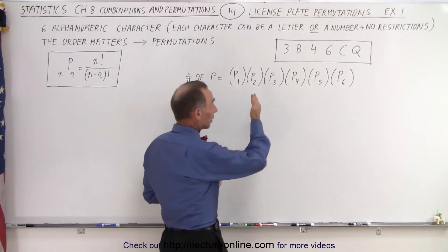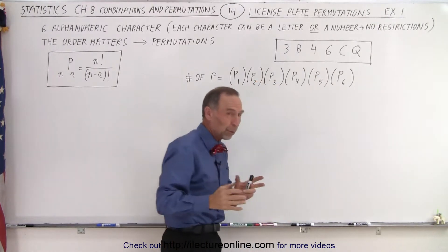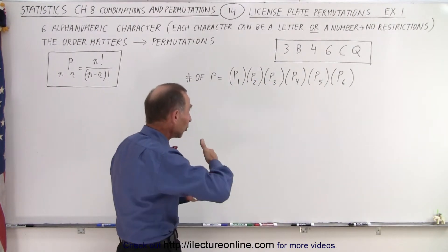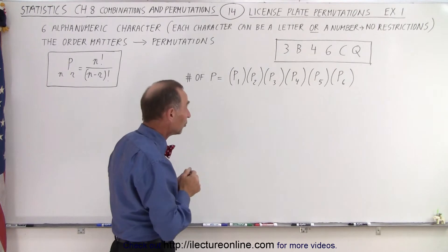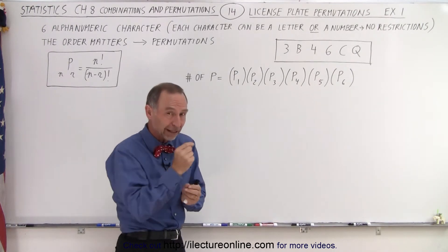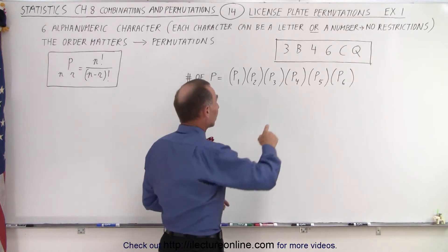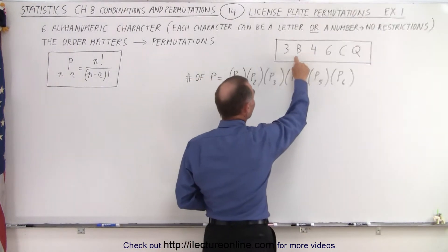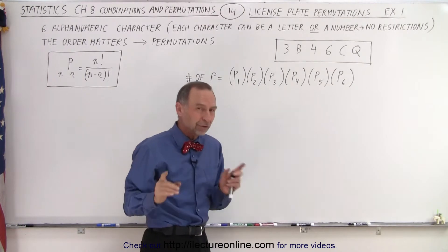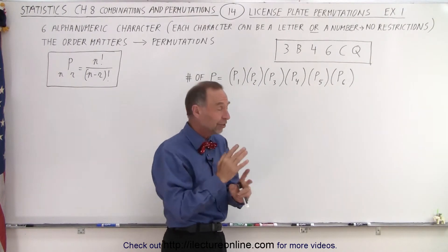Let's say we have an example here: a license plate with six characters — what we would call alphanumeric characters, meaning they can be letters or numbers. There are 36 possibilities for each character, and '3B' is not the same as 'B3' if we take the first two characters as an example. Therefore it's permutations, not combinations, since order does matter.